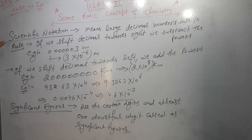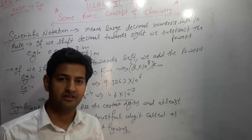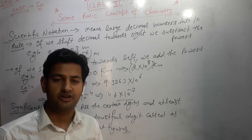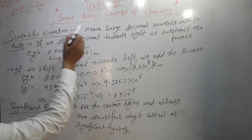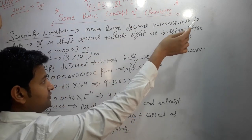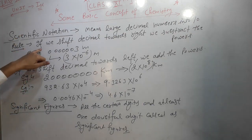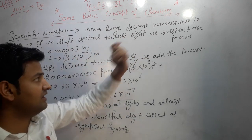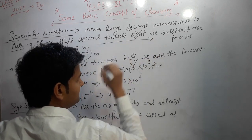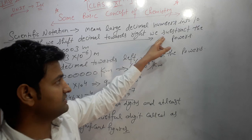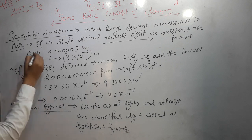Our next topic is scientific notation — how to write a large quantity in scientific notation. Scientific notation means converting large or small decimal numbers into a number times 10 raised to a power. If we shift the decimal point to the right, we subtract the power of 10.